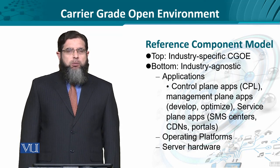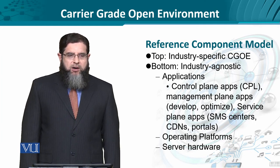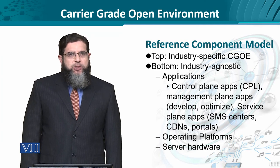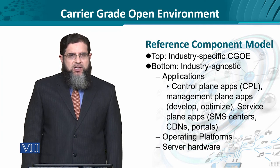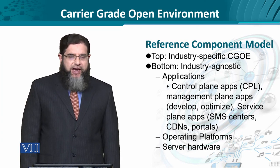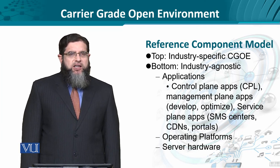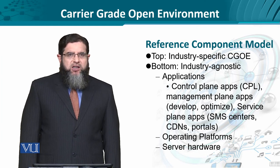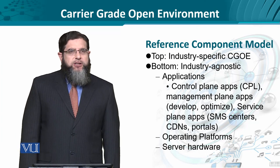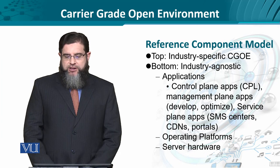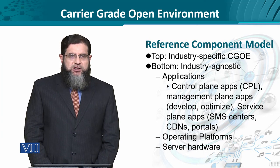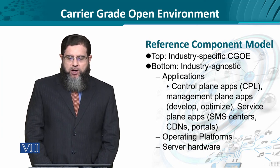Moving to the reference component model, we have a layered architecture. The top layer is the industry-specific carrier-grade open environment — whatever applications the industry is going to offer to end users in NGN. The bottom is the industry-agnostic environment, where NGN doesn't concern itself with what hardware, software, or network architecture is deployed, as long as it meets end-user requirement-specific features. We have the application layer, the operating platforms, and the server hardware.